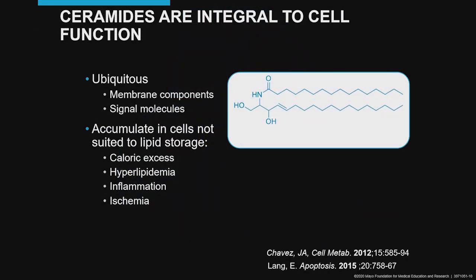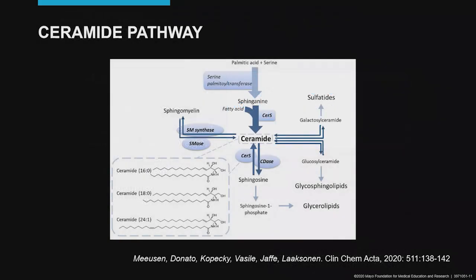What are ceramides? They're phospholipids located in all cell membranes, but they're not simple inert molecules. They're signaling molecules that increase with caloric excess, hyperlipidemia, inflammation, or ischemia. The ceramide pathway is a very complex pathway. Certain ceramide species, such as 16-0, 18-0, and 24-1, have been associated with negative atherosclerotic events — myocardial infarction, stroke, and even death. These studies have been performed in cohorts of patients with known coronary artery disease for secondary prevention.